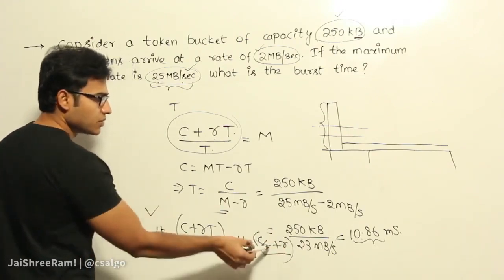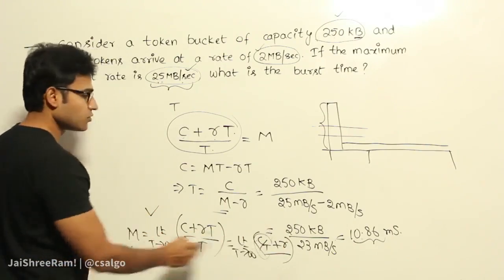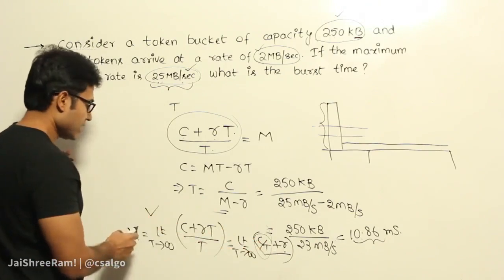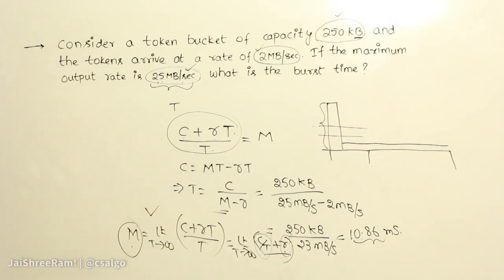Now what will happen? C by T is going to be 0. Therefore, maximum rate is going to be the input rate as the time tends to infinity. As we increase the time, the maximum rate and the input rate both are going to be same. You cannot exceed it.